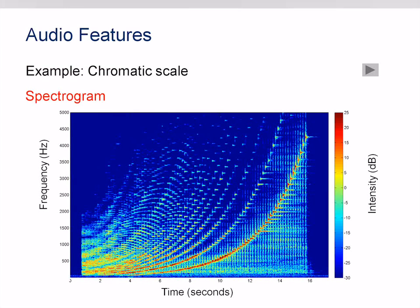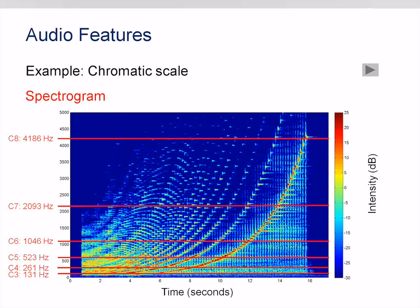I will now explain what chroma features are and how they can be computed. Let us consider the chromatic scale as an example. In the first step, one computes a short-time Fourier transform. Here you see the resulting magnitude spectrogram, where the horizontal axis corresponds to time and the vertical axis to frequency. The color red indicates high intensity, whereas blue indicates low intensity. Note that the fundamental frequencies of the notes behave in an exponential fashion — playing a note one octave higher increases the fundamental frequency by a factor of 2.